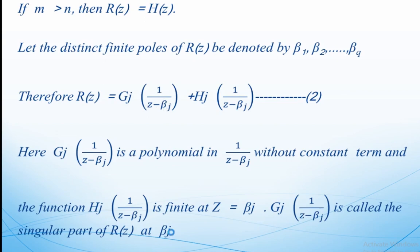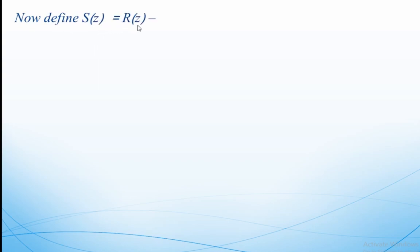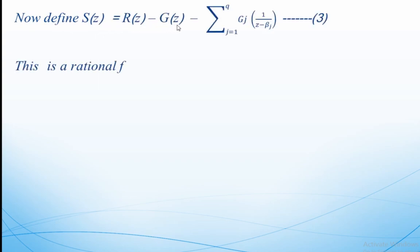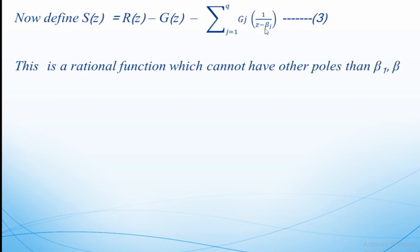By equation (1) we can write r(z) = gⱼ(1/(z − βⱼ)) + hⱼ(1/(z − βⱼ)), where gⱼ(1/(z − βⱼ)) is a polynomial in 1/(z − βⱼ) without a constant term, and hⱼ(1/(z − βⱼ)) is finite at z = βⱼ. The term gⱼ(1/(z − βⱼ)) is called the singular part of r(z) at βⱼ. Now define a new function s(z) = r(z) − g(z) − Σgⱼ(1/(z − βⱼ)), where j varies from 1 to q.